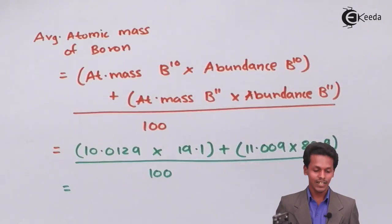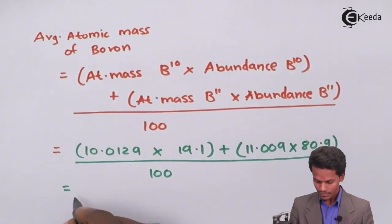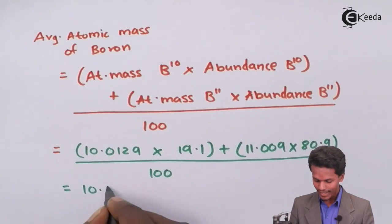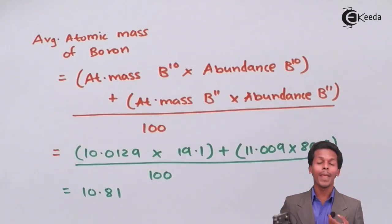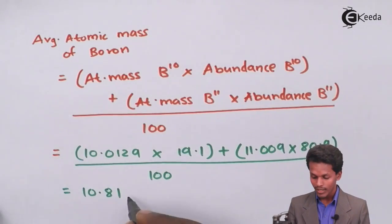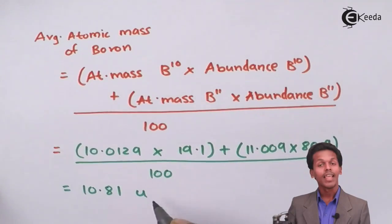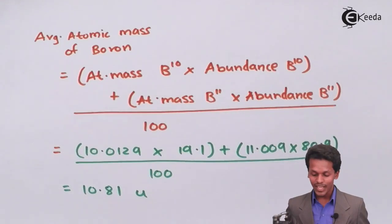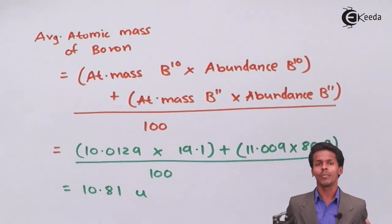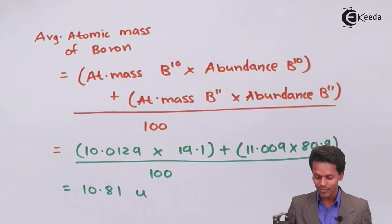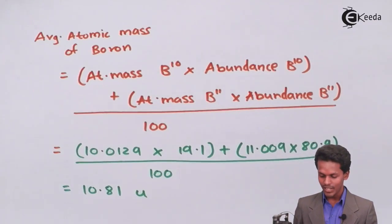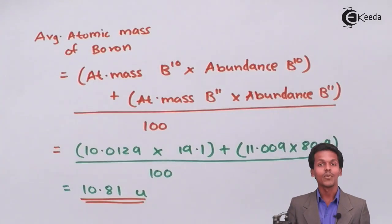The answer we get is 10.81. Since this is average atomic mass, the unit is unified mass (u). So the average atomic mass of boron is 10.81 u. This is how we calculate average atomic mass when two or more isotopes are given.